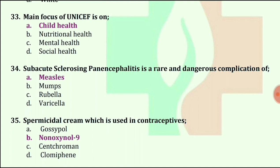Spermicidal cream used in contraceptives — options are gossypol, nonoxynol-9, centchroman, and clomiphene. The answer is nonoxynol-9.